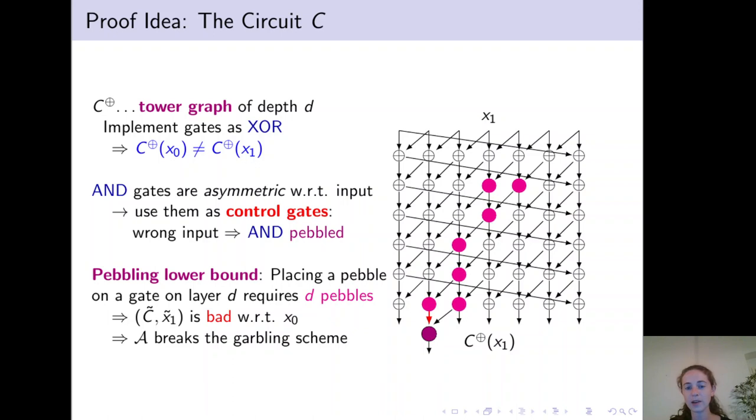We then prove a pebbling lower bound for the C XOR graph structure. Namely, that placing a pebble on layer D requires at least D pebbles on the XOR circuit. But since for C tilde X1 tilde, the adversary extracts a pebble on an AND gate on layer D plus one. And such an AND gate can only be pebbled if a parent in the XOR circuit was pebbled. This implies that the adversary extracts a bad pebbling configuration and implies that the adversary indeed breaks the garbling scheme.